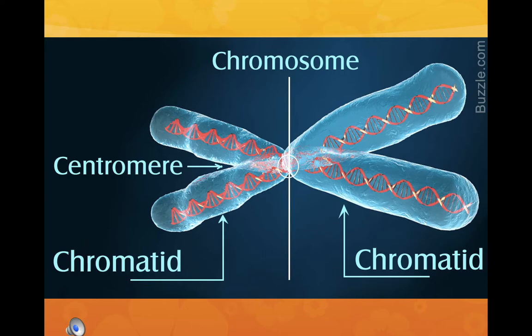Each chromosome's centromere is located at a particular site. As the spindle fiber contracts, the sister chromatids are separated at the centromere and each is pulled towards the two poles of the dividing cell. After the completion of cell division, the chromatids, now called chromosomes, decondense and revert back to their very long and fine thread-like chromatin fibers.